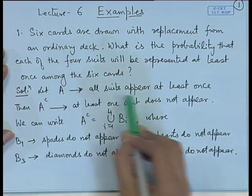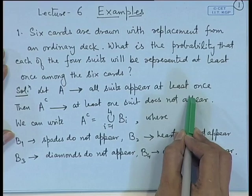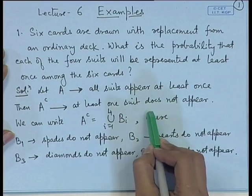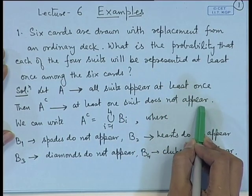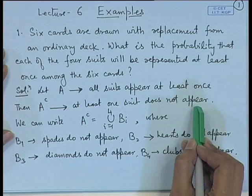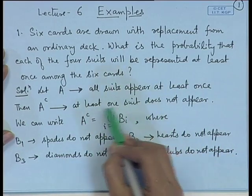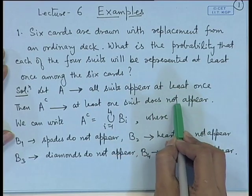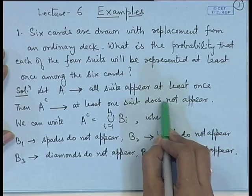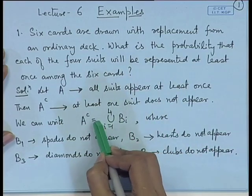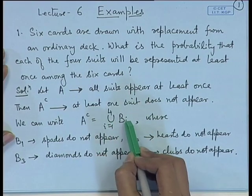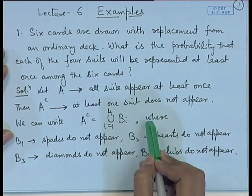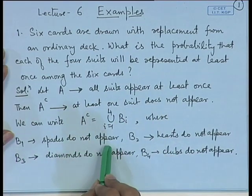Let event A be that all suits appear at least once. Then A complement denotes the event that at least one suit does not appear. If we try to decompose it directly by saying exactly one suit does not appear, exactly two do not appear, or exactly three do not appear, that leads to a complicated event again.